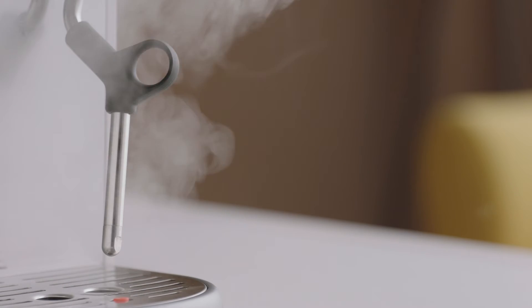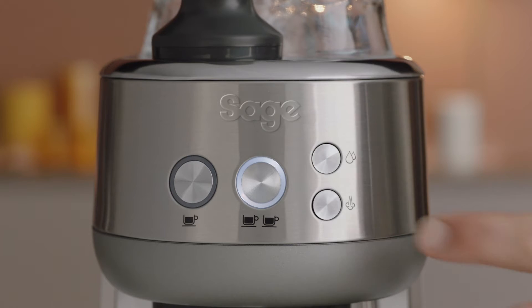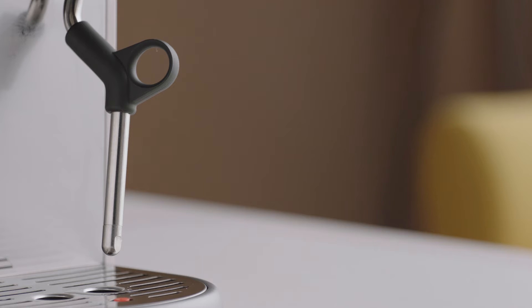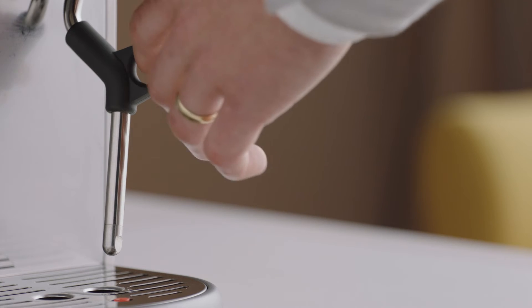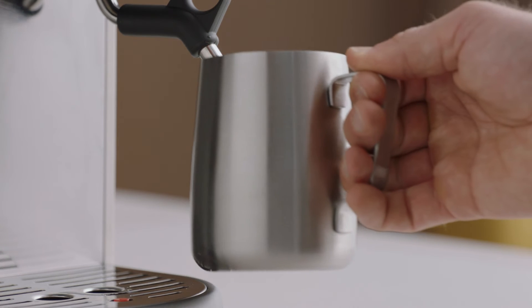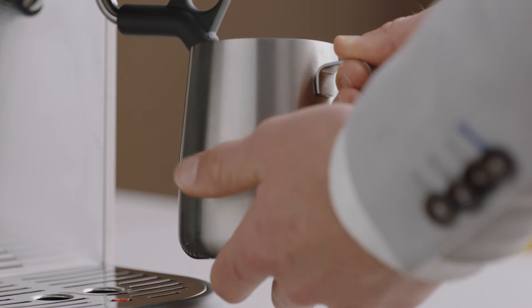Wait until the steam is at full strength, then press the steam button to pause. Now within eight seconds, insert the steam wand into the jug. You're looking for one to two centimeters below the surface of the milk. Press the steam button to start the flow of steam.